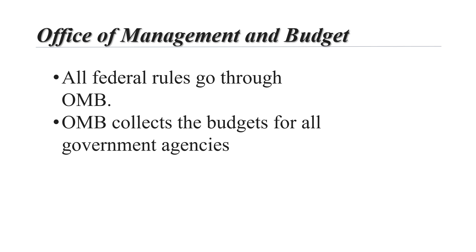The centralization of regulatory and budgetary functions is an indicator of increased presidential power relative to Congress. Under OMB's review process, departments and agencies must get the president's approval before giving congressional testimony on pending legislation, making legislative proposals, or answering congressional inquiries about their activities.